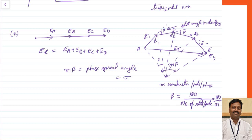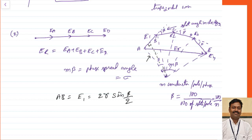To calculate this, I can take a bisector perpendicular to the chord, so it will be perpendicular. This is my side and this is my hypotenuse, and this is the opposite side. This angle will become beta by 2. From this, I can calculate: AB equals E1 equals 2R·sin(β/2), because sin(β/2) equals opposite over hypotenuse and the hypotenuse is my radius, the opposite side is voltage E1 by 2.